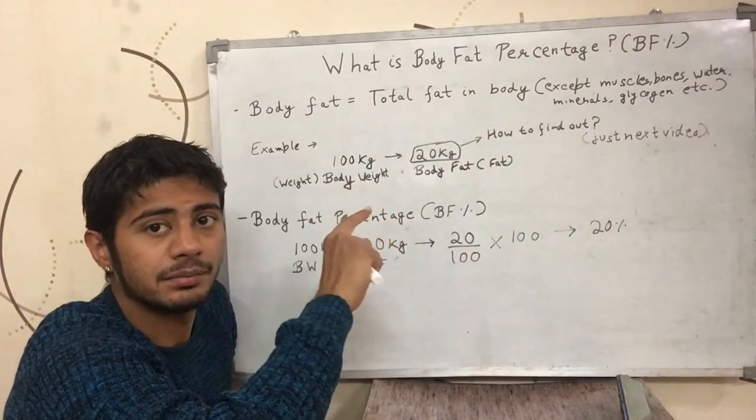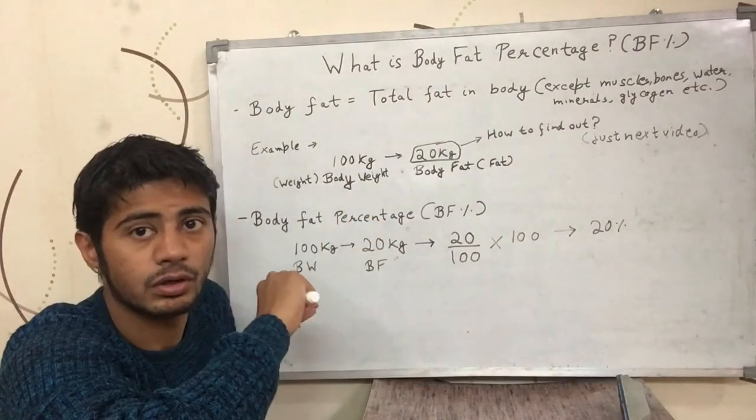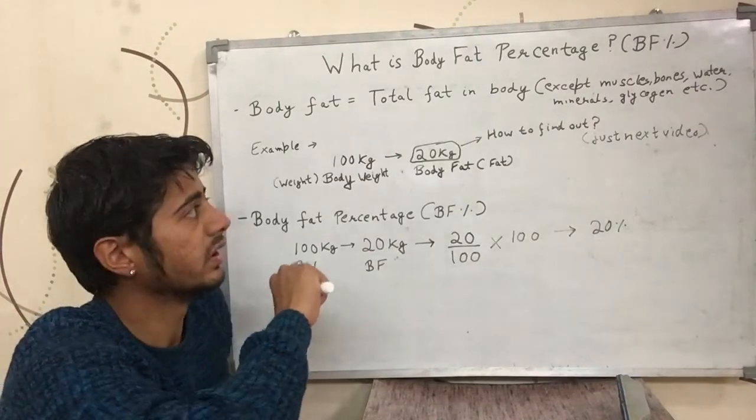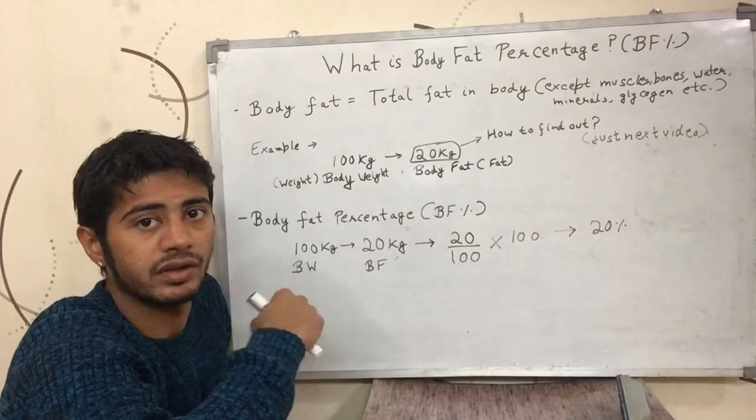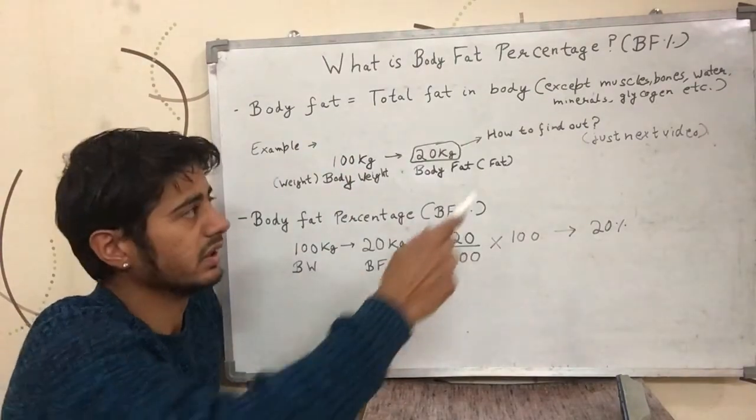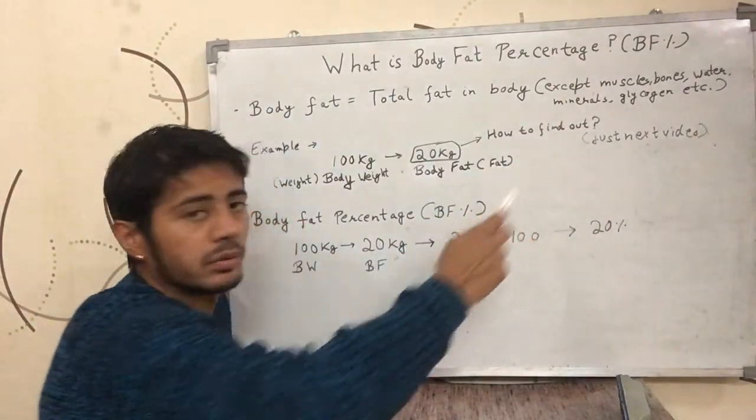So everything except fat in your body is excluded to calculate the body fat, the amount of body fat you have in your body. And that mostly includes these things: muscles, bones, water, minerals, glycogen.